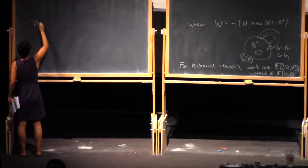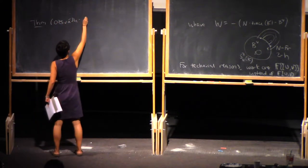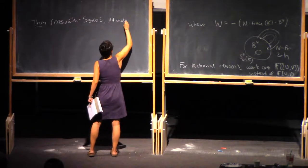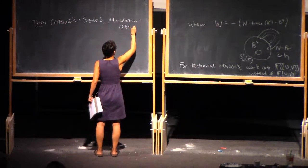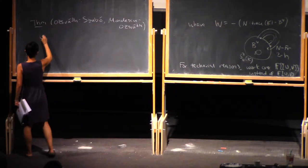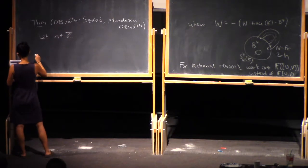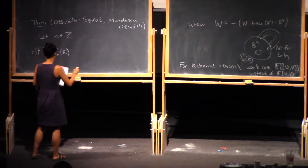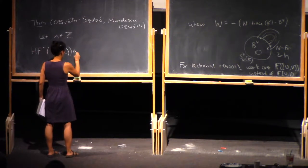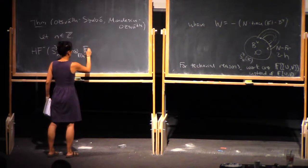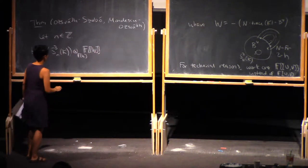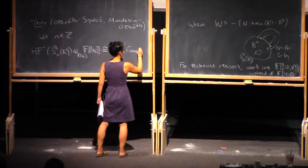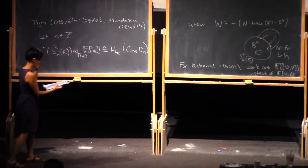So theorem, it's due to Ozsvath and Szabo. I guess Ozsvath and Szabo stated it for HF plus, and we're doing it for HF minus, so I guess that's stated by Manolescu-Ozsvath. So this says that, well, let n be any integer. HF minus, so remember I said something about completing coefficients, so we need to work with completed coefficients. So you can just do that as follows. This is isomorphic to the homology of the mapping cone of this map d_n. Great.